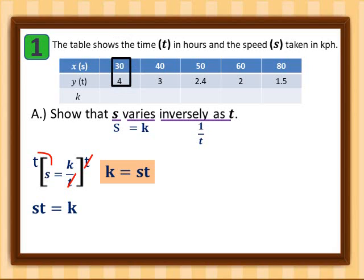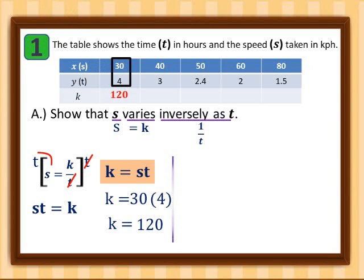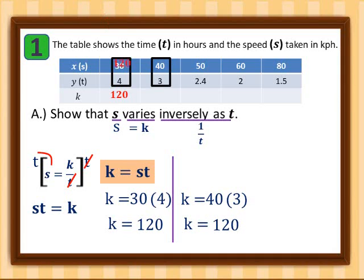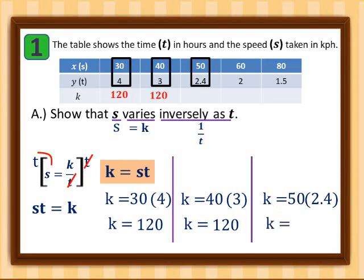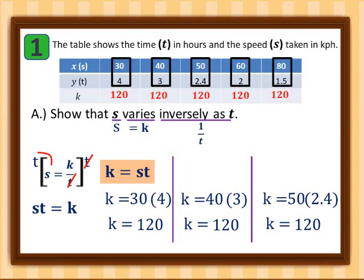Using the commutative property, k is equal to s times t. On the first column, speed is 30 and time is 4, so k equals 120. Second column: 40 times 3 equals 120. Third column: 50 times 2.4 equals 120. Fourth column: 60 times 2 equals 120. Fifth column: 80 times 1.5 equals 120. All k values are the same.